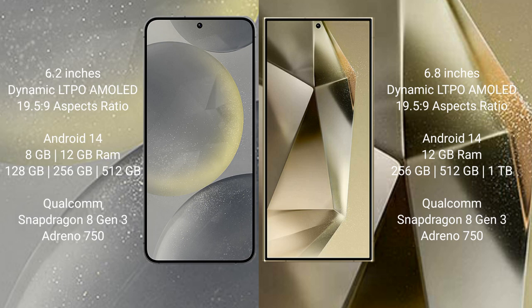The Samsung S24 comes with 8GB or 12GB RAM, and 128GB, 256GB, or 512GB internal storage. It is powered by the Qualcomm Snapdragon 8 Gen 3 processor with GPU Adreno 750.